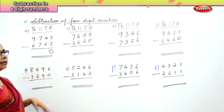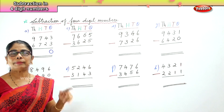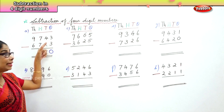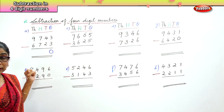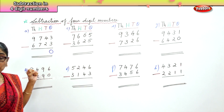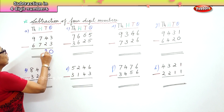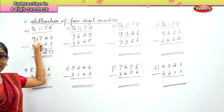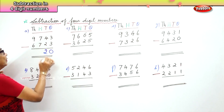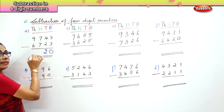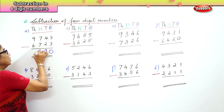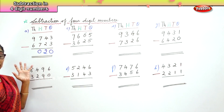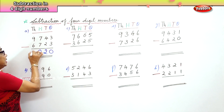Any number take away the same number is zero. In the tens place, we have four tens take away two tens — four take away two is two. In the hundreds place, we have seven hundred take away seven hundred — seven take away seven is zero. Then you have 9,000 minus 6,000.